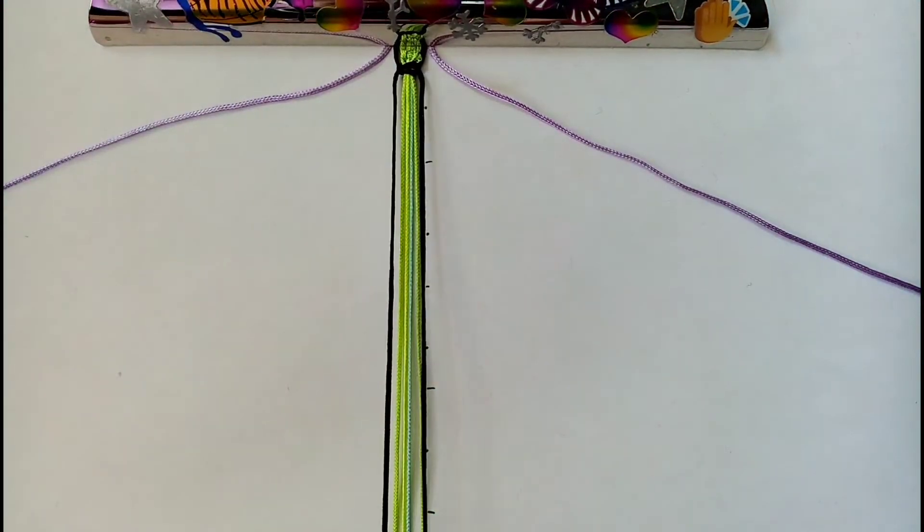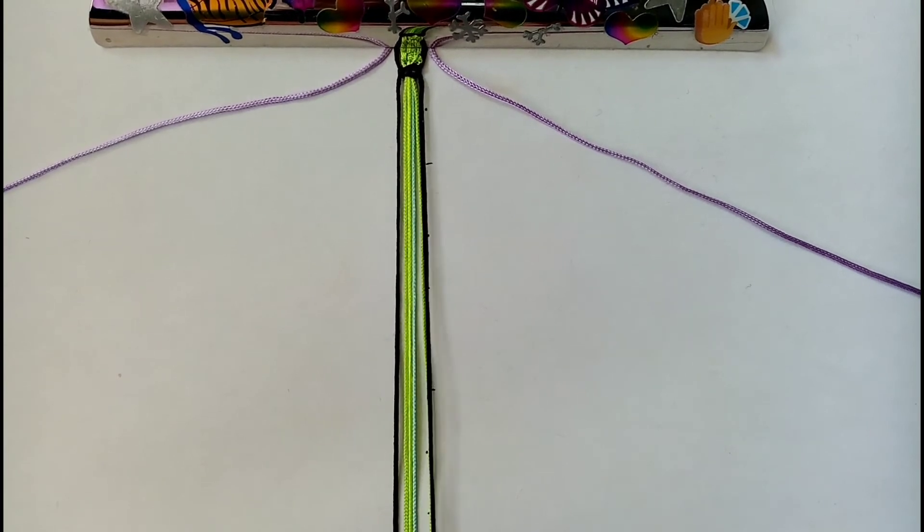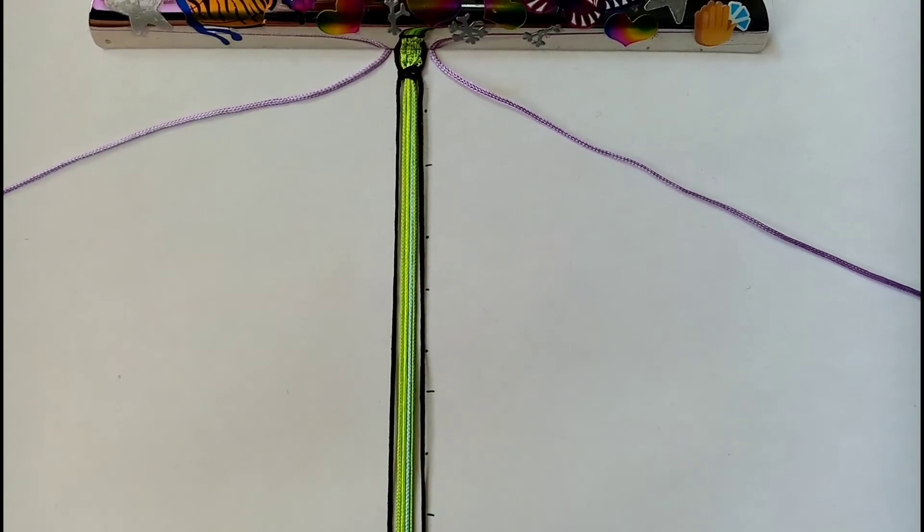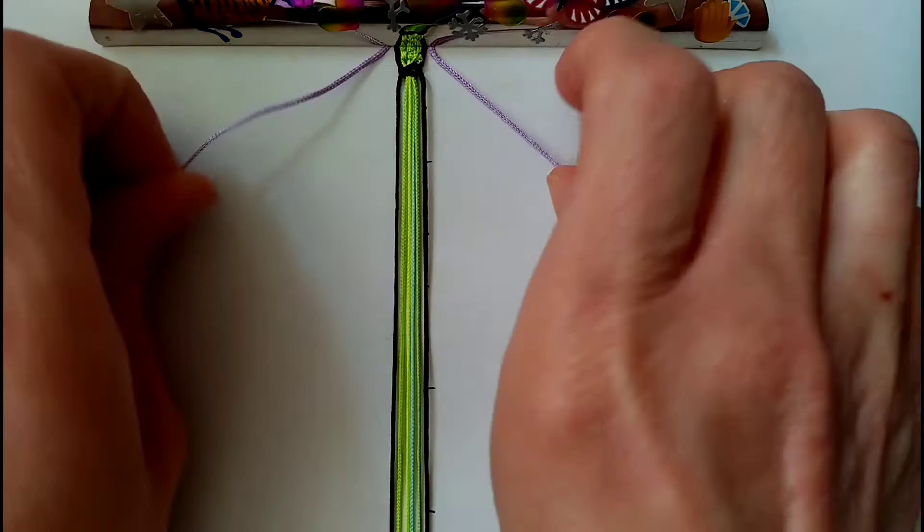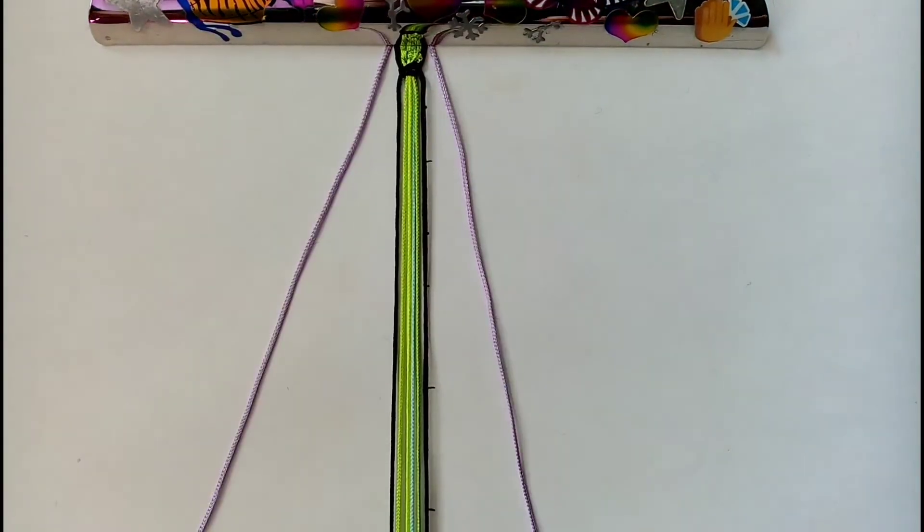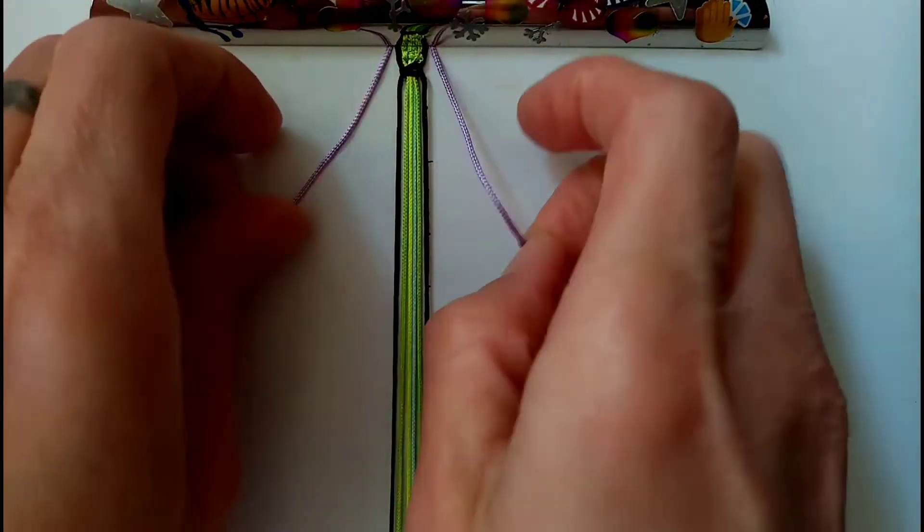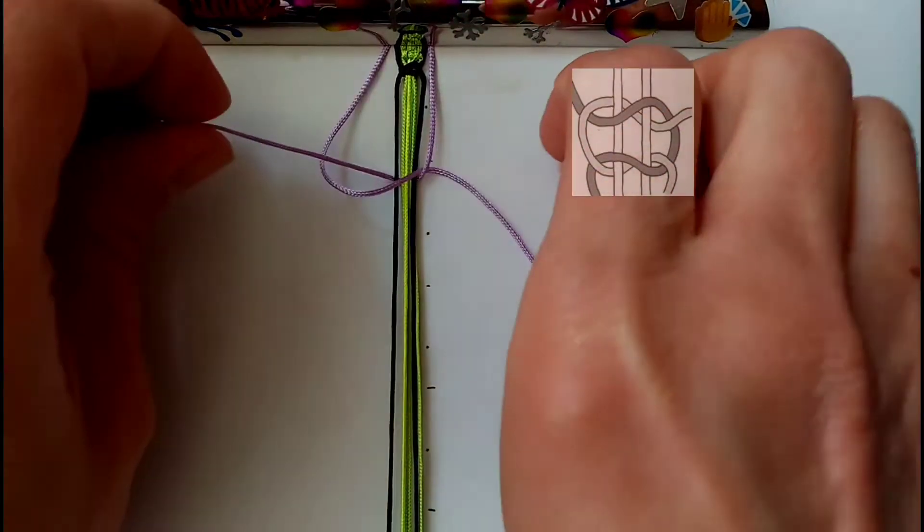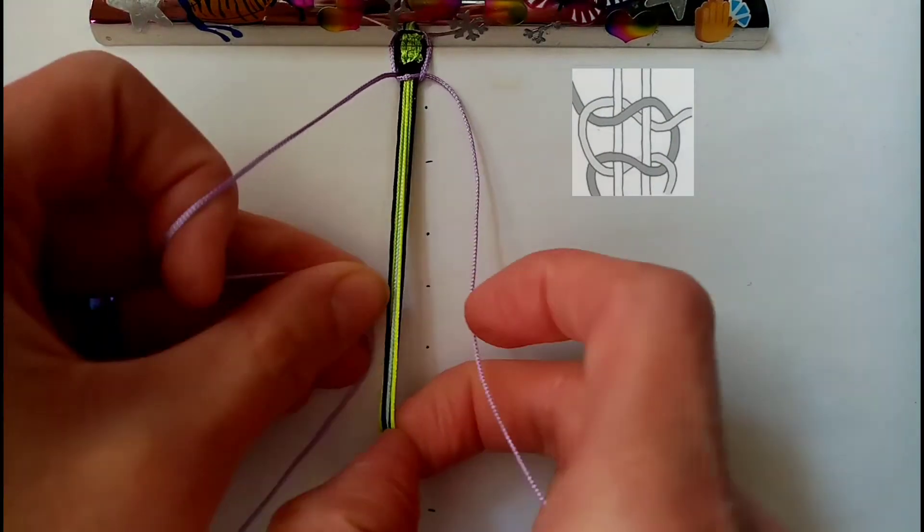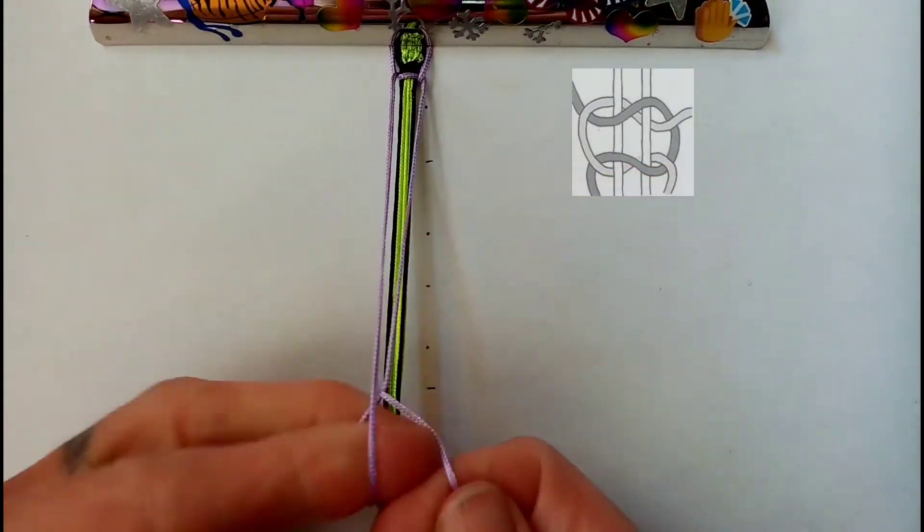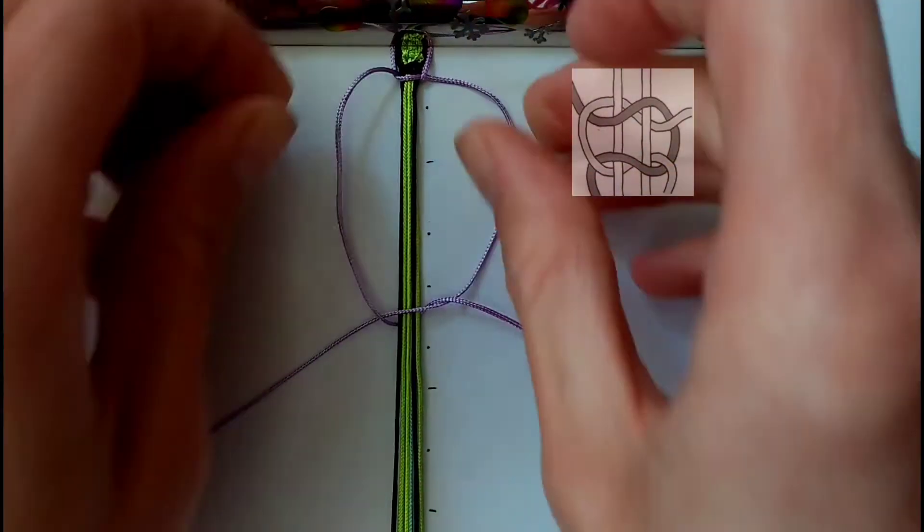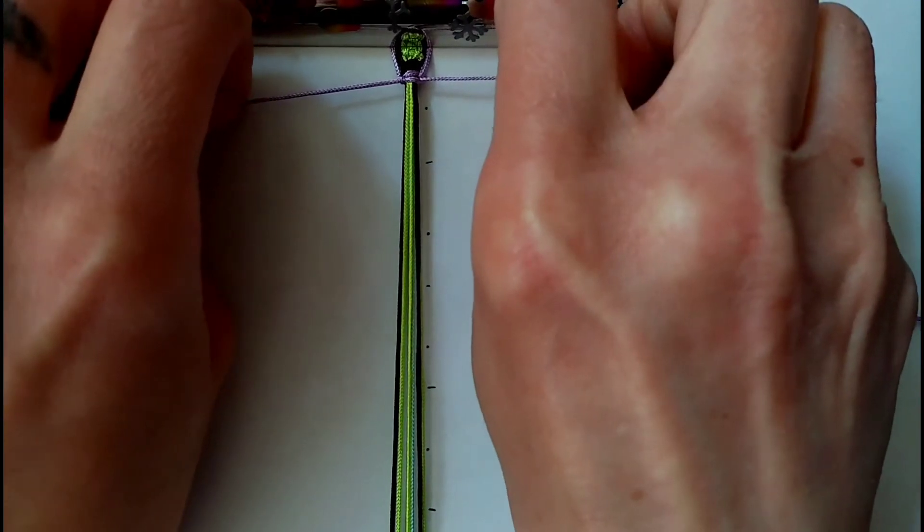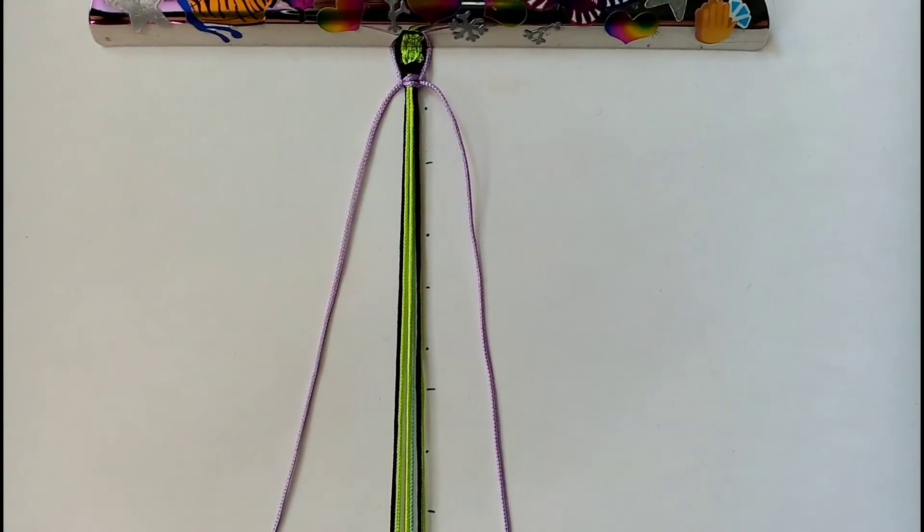And then following with the theme of what you did with your last set of working cords you want to clip these to the board and then taking your last two cords in positions 1 and 8 you want to do a square knot over the rest of the cords.